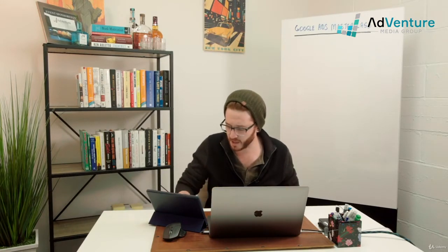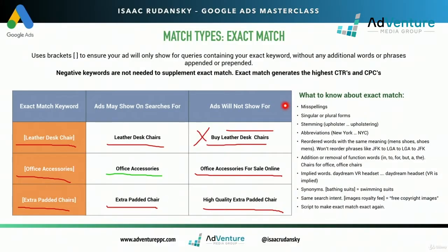A couple of things to know about exact match — Google has made a bunch of changes over the years. Misspellings: if 'chair' is spelled C-H-A-R-E in a search term, it could still trigger your keyword C-H-A-I-R. Singular or plural form: if my exact match keyword is 'leather desk chair' and somebody searches for 'leather desk chairs' (plural) or vice versa, Google retains the right to show the ad.